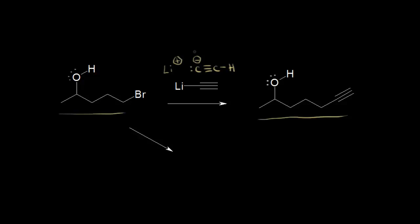You might think that this organolithium compound right here would function as a nucleophile. We have a negative one formal charge on this carbon, so this lone pair of electrons is going to be our nucleophile and attack this carbon, which is a little bit partially positive. These electrons will kick off onto the bromine, and you would end up adding these carbons to form your target molecule.